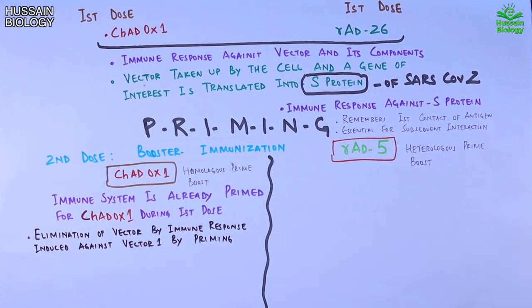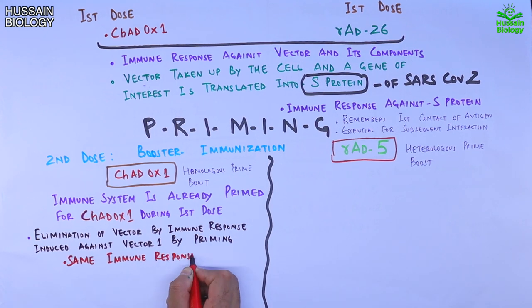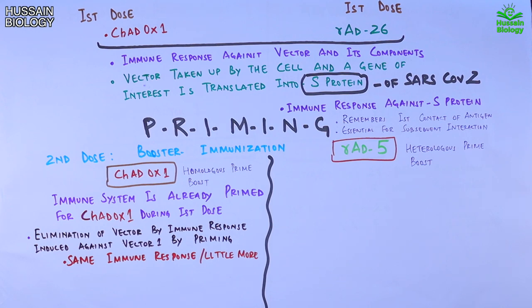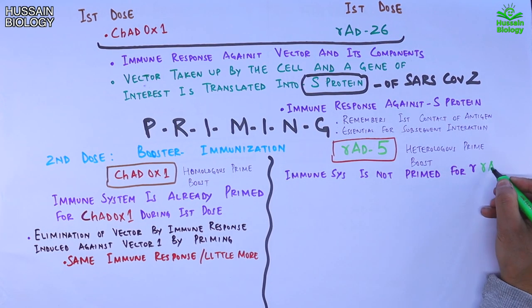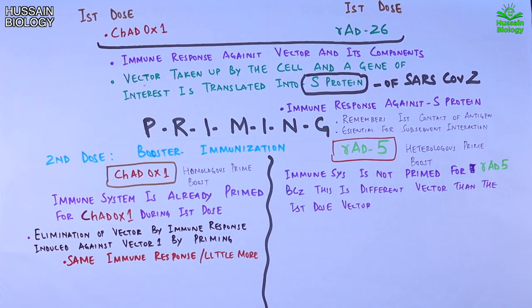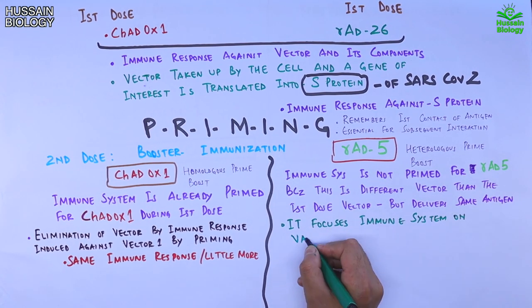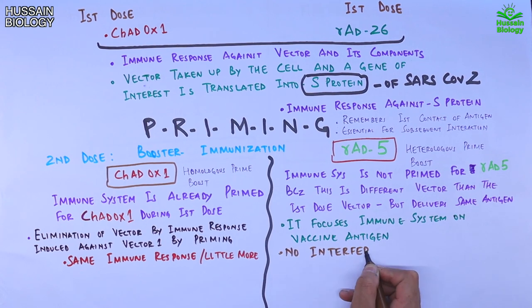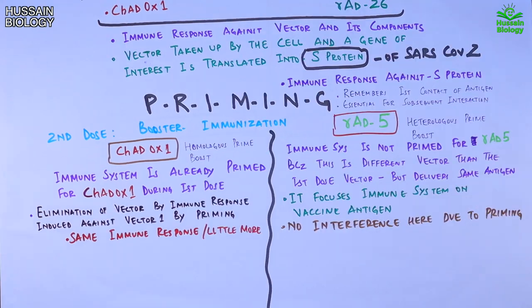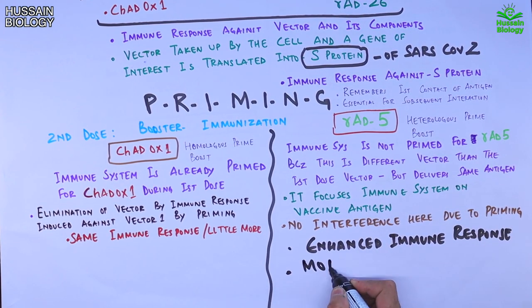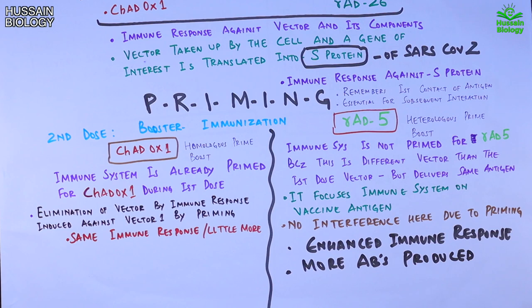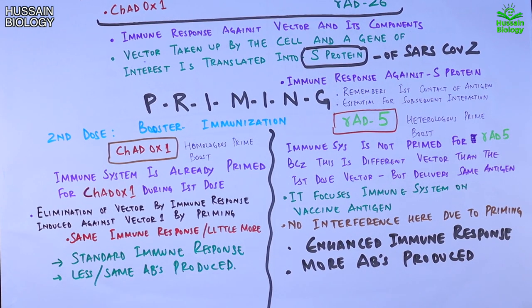In homologous prime-boost vaccination, we get the same immune response or just a little boost. Moving to heterologous prime-boost vaccination, our immune system is not primed for rAd5 because it is a different vector from the first dose, but it delivers the same antigen. This focuses the immune system on the vaccine antigen with no interference due to priming. Due to all these factors, we get an enhanced immune response and more antibodies are produced, whereas with the homologous method we get a standard immune response and less or the same number of antibodies as in the first dose.